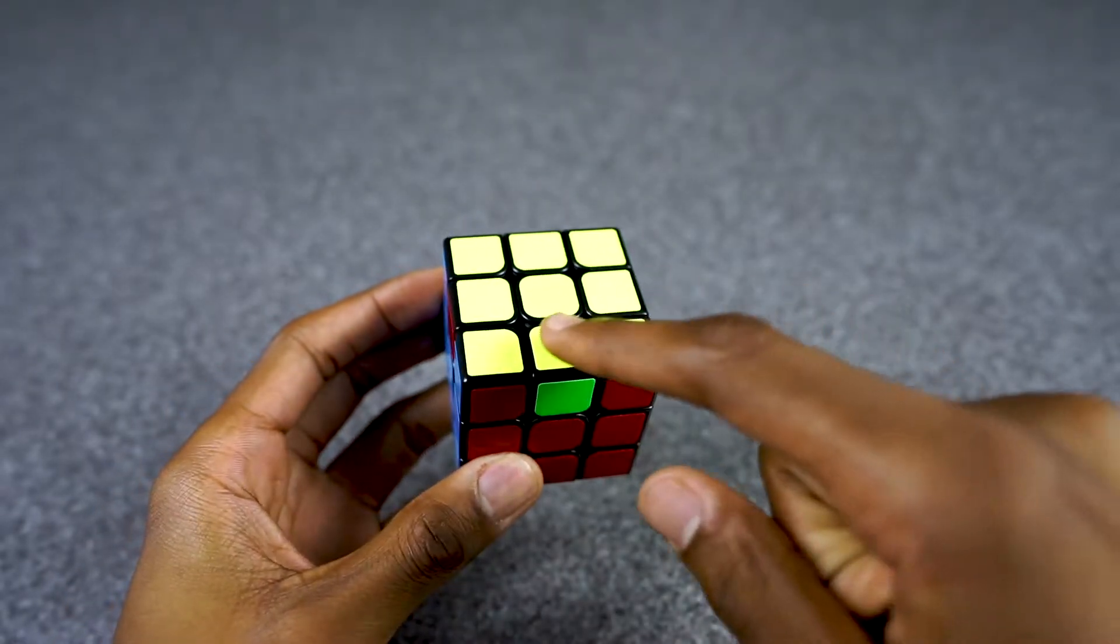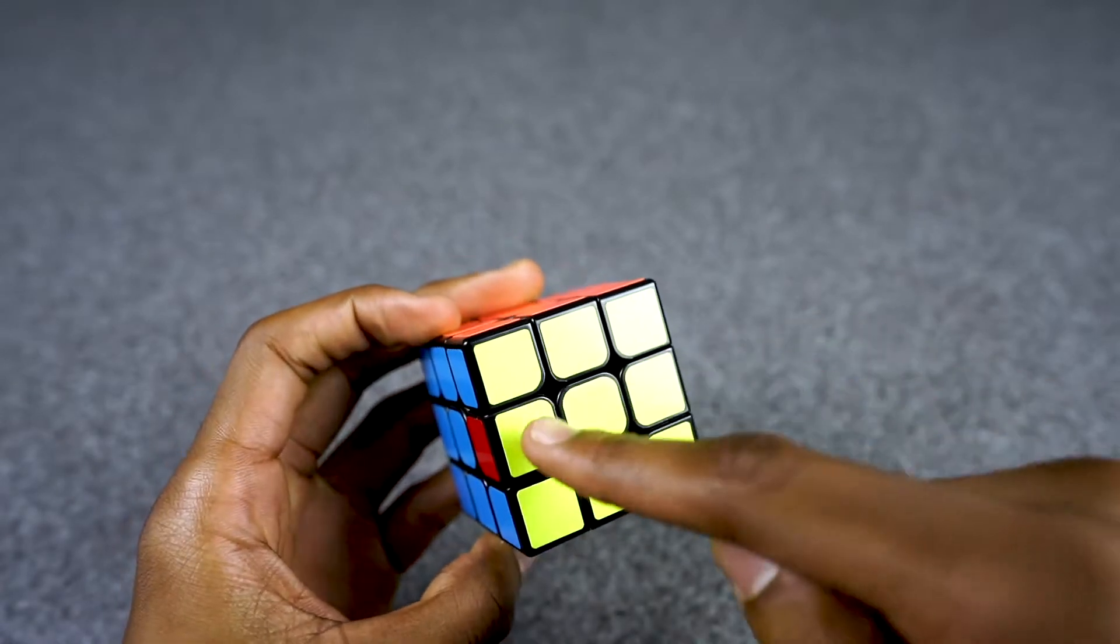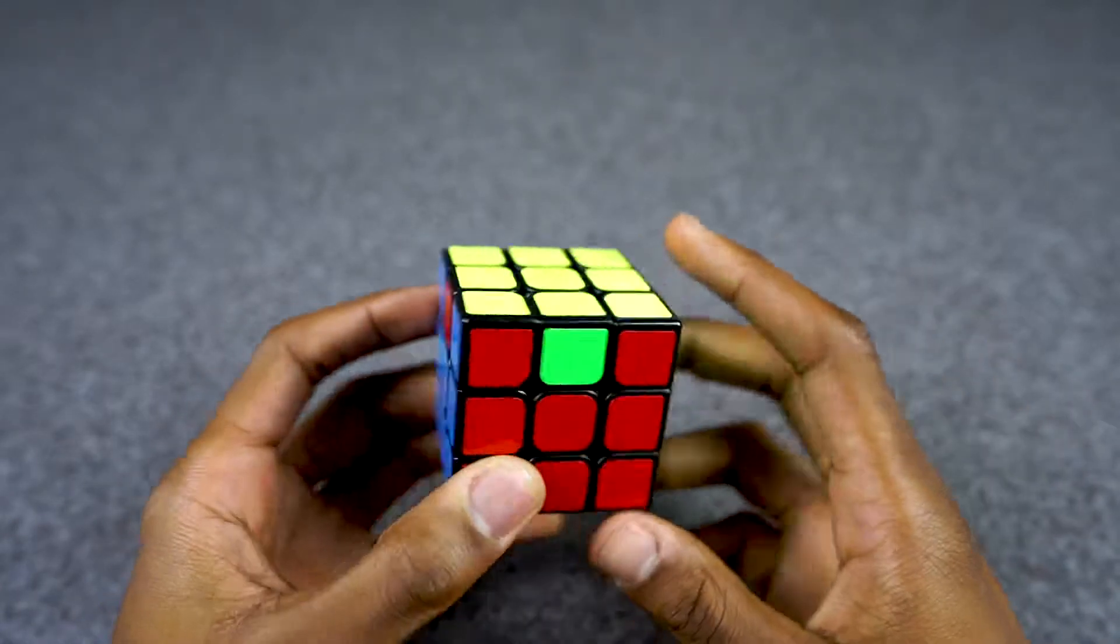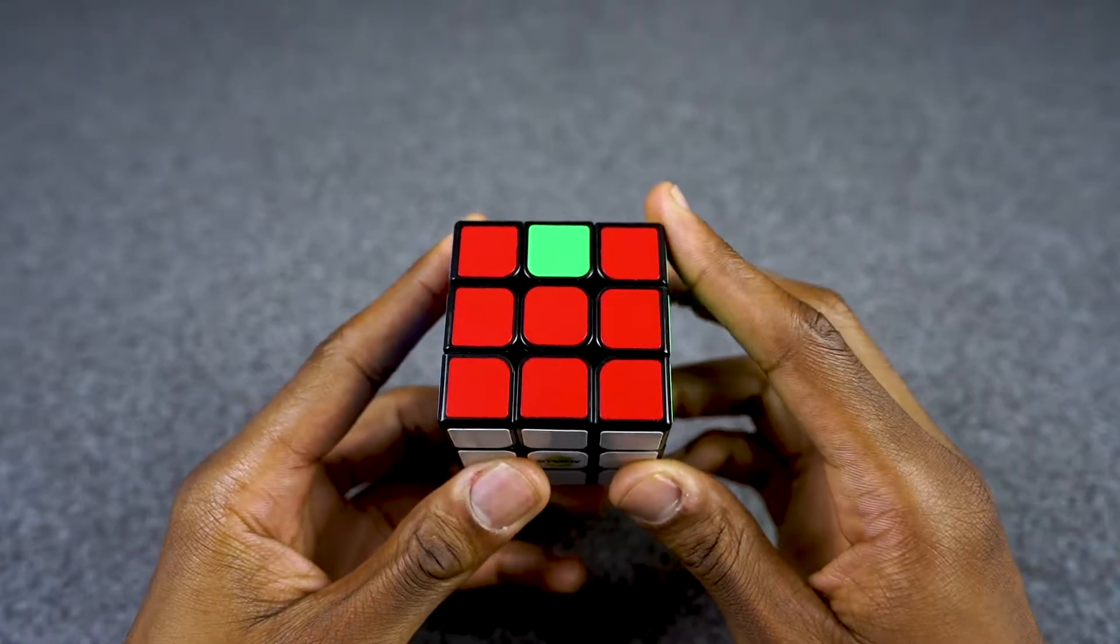It's going to be one where either three edge pieces are not solved yet or all four edge pieces are not solved yet. This is the most common where three are not solved, and then we do the last algorithm.